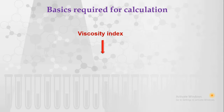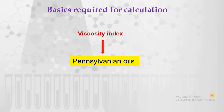The basics for the calculation: viscosity index can be calculated by considering two different oils. One is Pennsylvania oil and the other is Gulf oil. The viscosity index of Pennsylvania oil is 100 and that of Gulf oil is 0, and these are considered as references for viscosity index calculation.